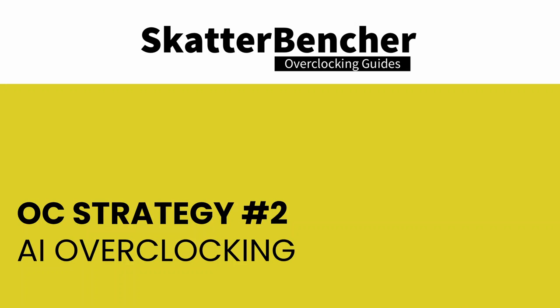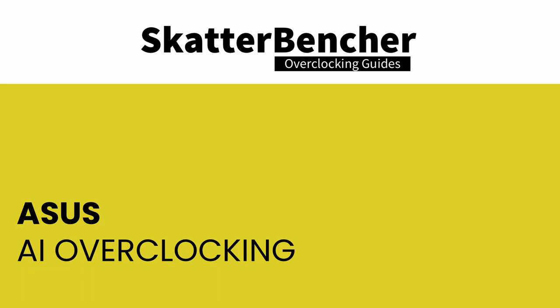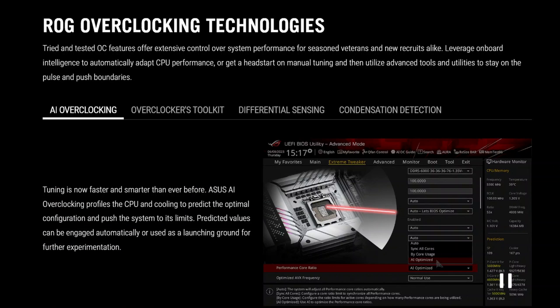In our second overclocking strategy, we leverage the ASUS features AI Overclocking and XMP Tweaked. ASUS AI Overclocking uses a unique strategy for automatic overclocking: instead of working with preset frequency and voltage profiles, the system monitors the CPU and cooling system throughout an initial testing phase, then predicts the optimal settings.